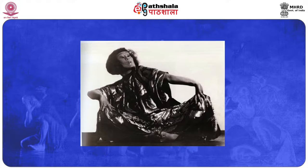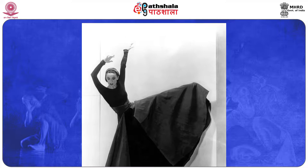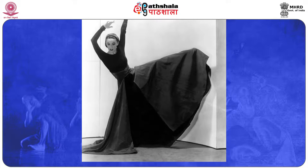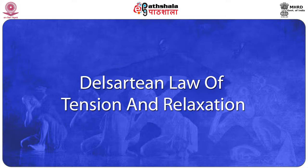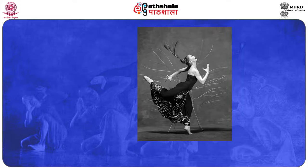Her style was introduced to the United States in 1930 by her student Hanya Holm. By 1930, Martha Graham developed a new structure of movements which she called contraction and release. This was based on her own analysis of the Delsartian law of tension and relaxation. This system of muscle control gave Graham's dancers a firm, angular look that contrasted with the soft, expressive bodily motions of Isadora Duncan and Ruth St. Denis.